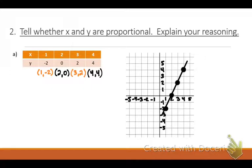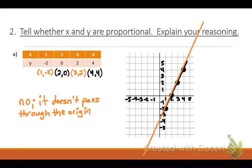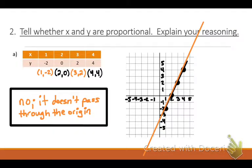This line could have many more points and keep going. Will that line, if I keep extending it, ever cross through the origin? No. The origin is right here — I'm never going to hit that. So when it asks whether X and Y are proportional, the answer is no. It doesn't pass through the origin. That's how you tell if something is proportional. If the line kept extending, it would never hit the origin, and that's why it's not proportional.